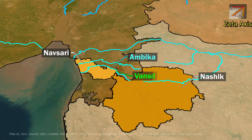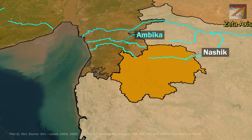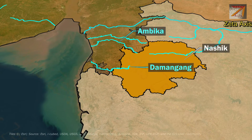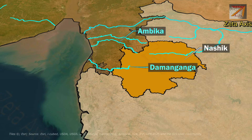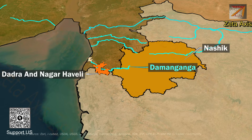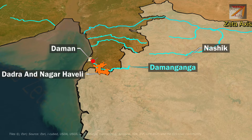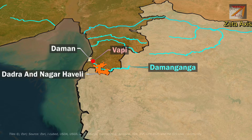Ambika River flows through Vansda National Park. The next river of Gujarat is Daman Ganga, also known as Daman River. It rises in the Sahyadri Hills in Nasik district of Maharashtra and flows through Maharashtra, Gujarat, and the Union Territory of Dadra and Nagar Haveli and Daman and Diu. The cities of Vapi and Silvassa lie on the banks of Daman Ganga River.